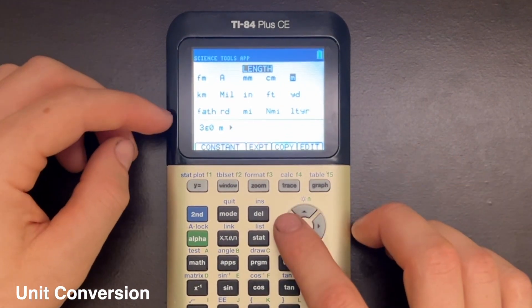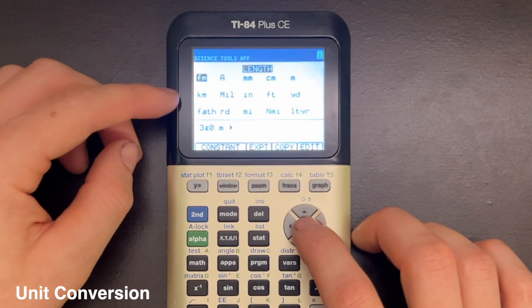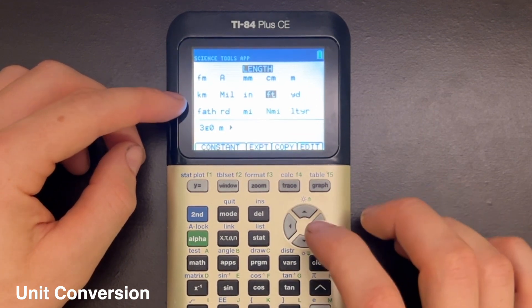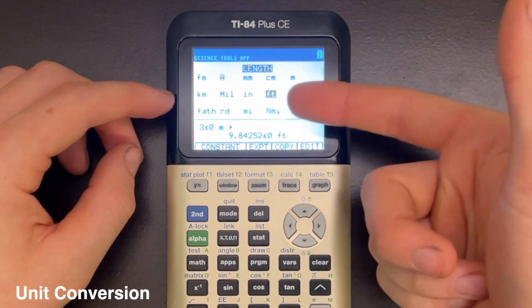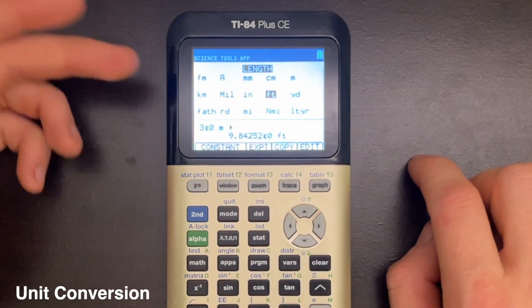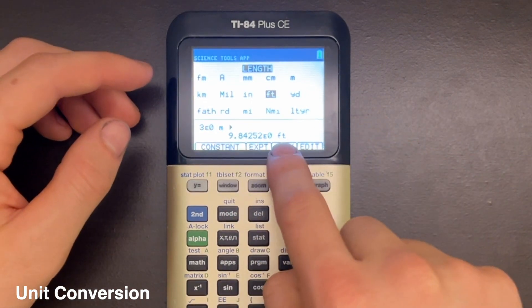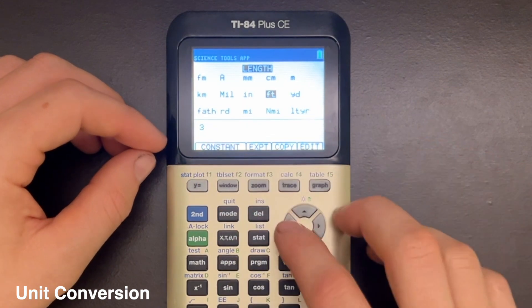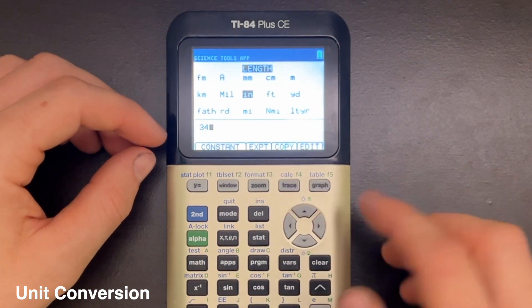And if I want that in feet, I would just scroll to feet and press Enter. And you can see down here my output is 9.8425 feet, so three meters is equal to that many feet. You can press the Graph key, which corresponds to Edit, to edit your entry if you want to change that to something else.